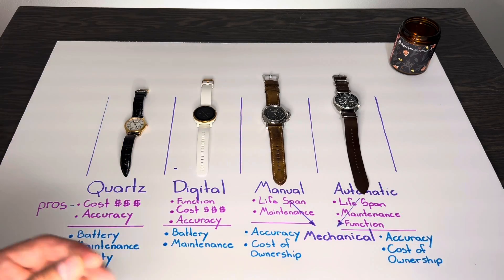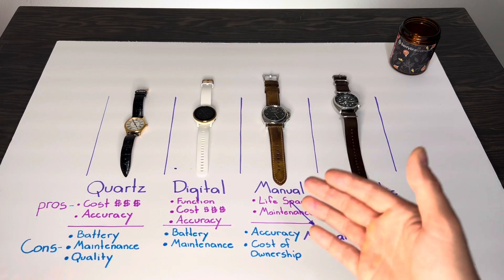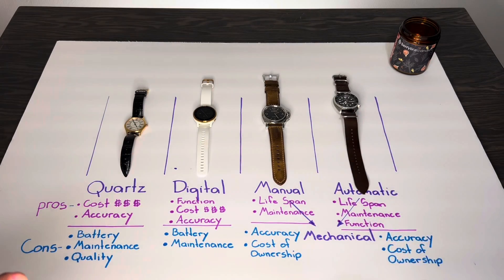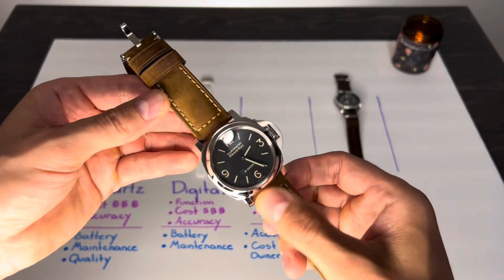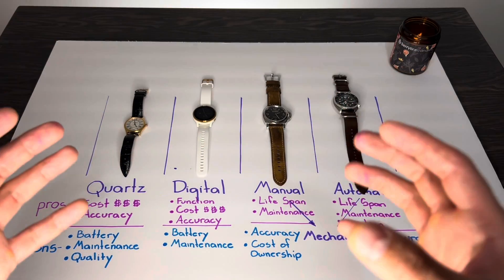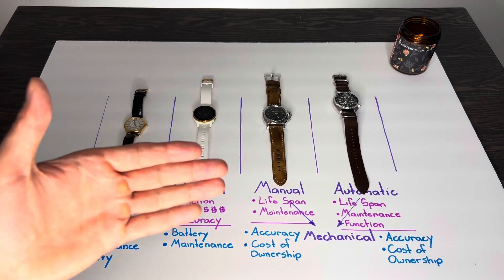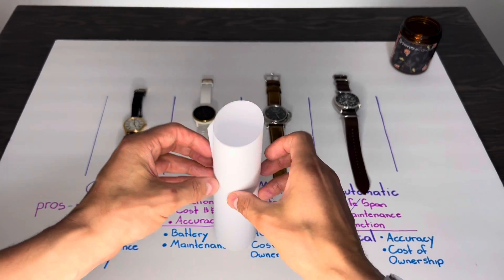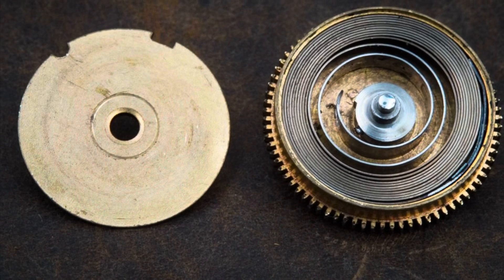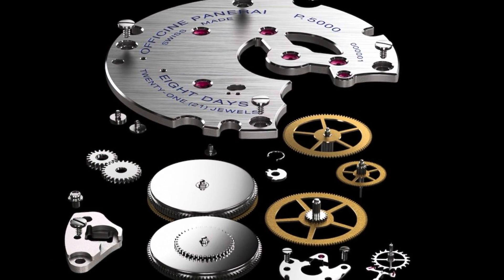Now we move on to the mechanical world, which is a bit more complicated and much more appreciated from a watch collector's perspective. The first one is your manual watch — this is actually my holy grail. It's a limited edition Panerai 914 with a whopping eight-day power reserve. Essentially, it's a bunch of mechanics mounted to a metal plate that function together like an interlocking gear set. As you manually wind, there is a spring that coils back and releases power as it slowly unwinds, providing what we call the power reserve.